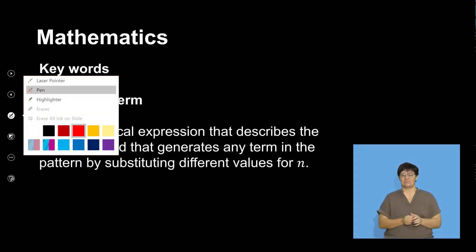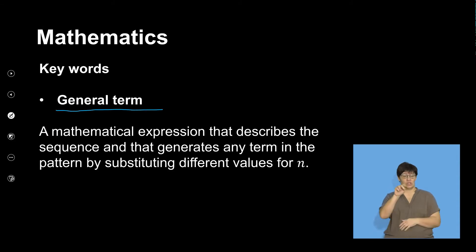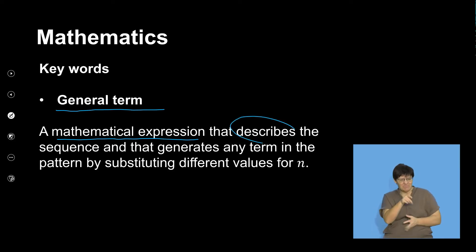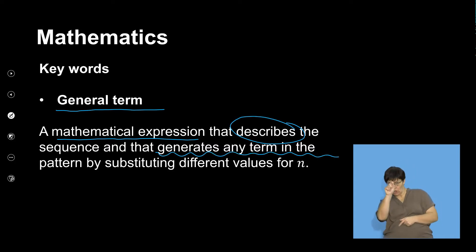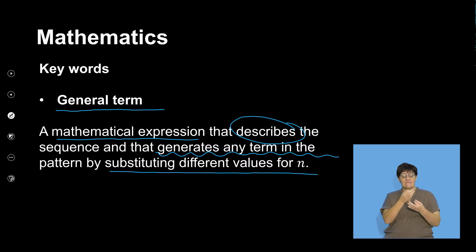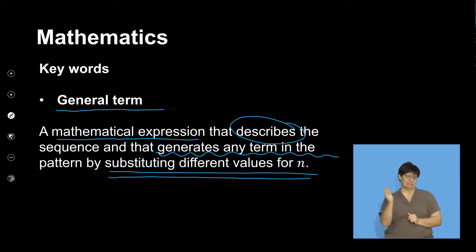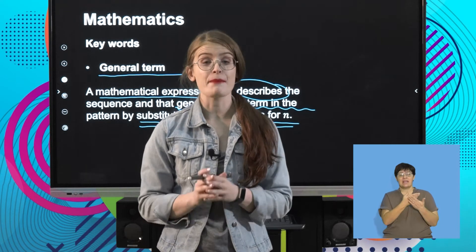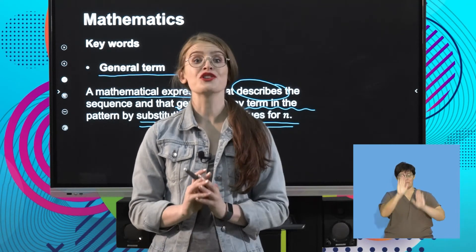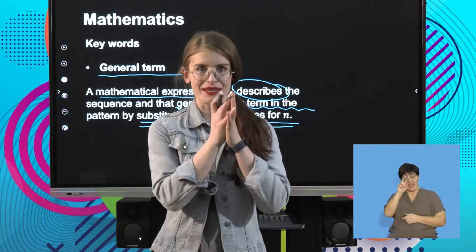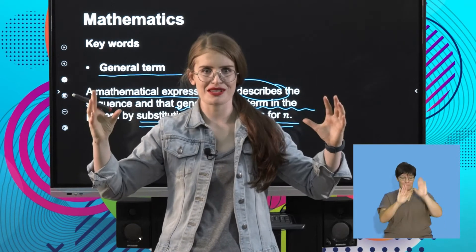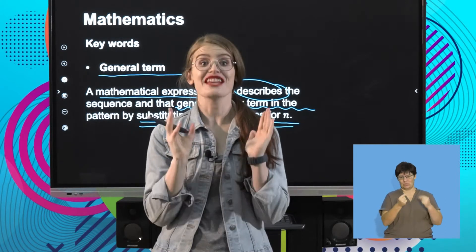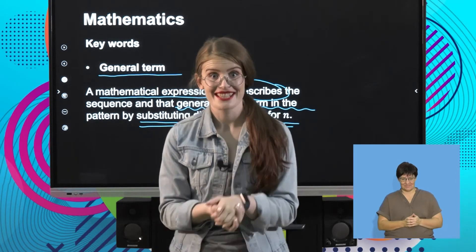The next definition is general term. The general term is a mathematical expression that describes the sequence and that can generate any term in the sequence by substituting in different values for N. It essentially means we can write a mathematical rule for our pattern using TN and N that can help describe the whole pattern and how it works. We're going to do more examples later to illustrate this concept.